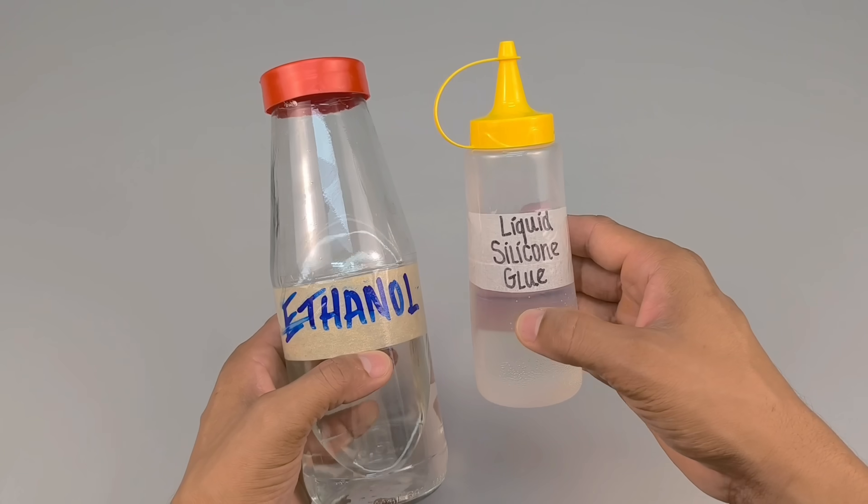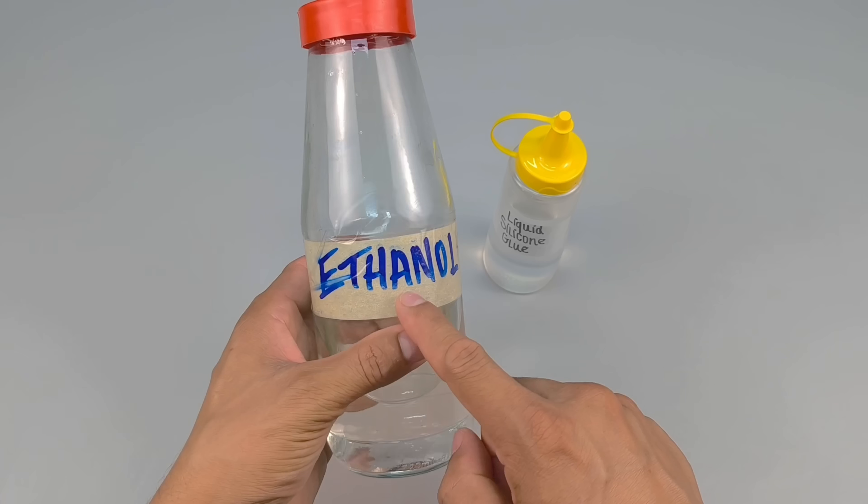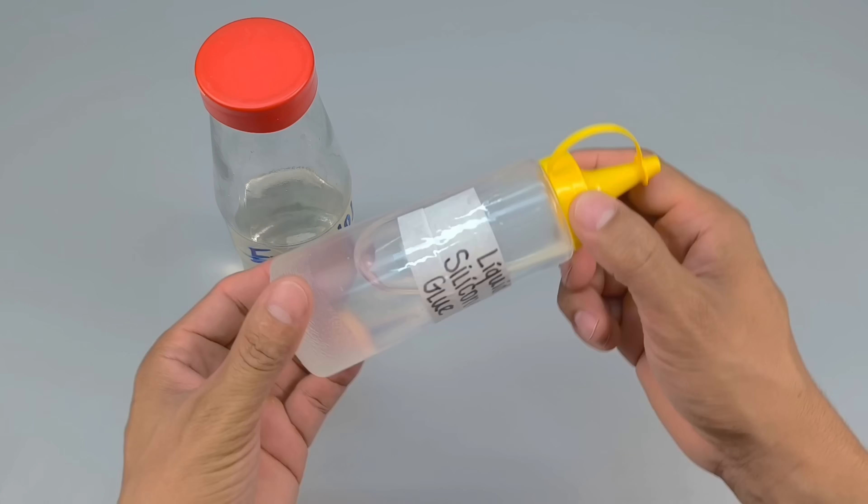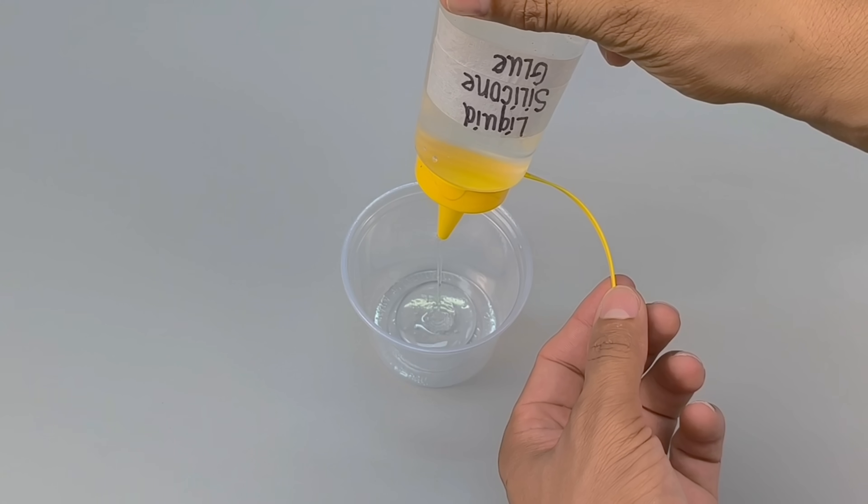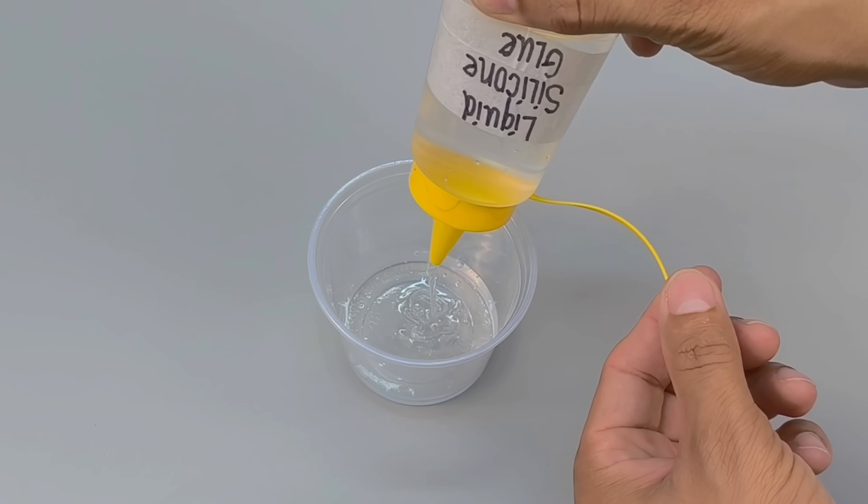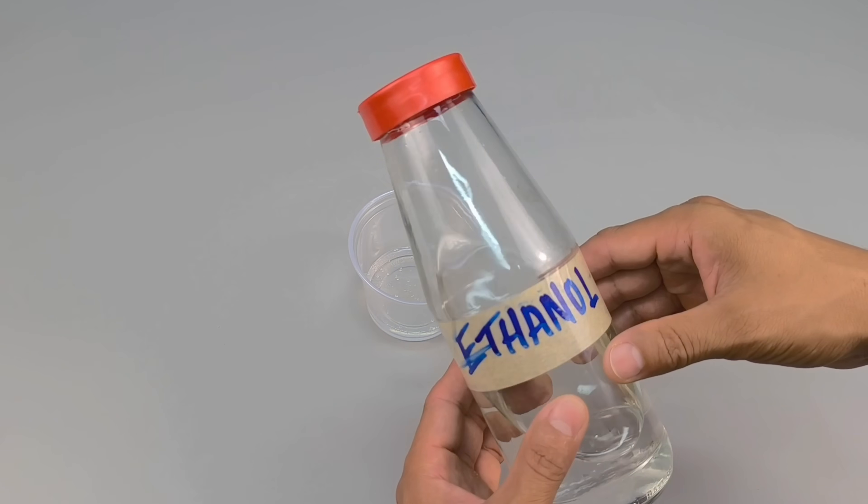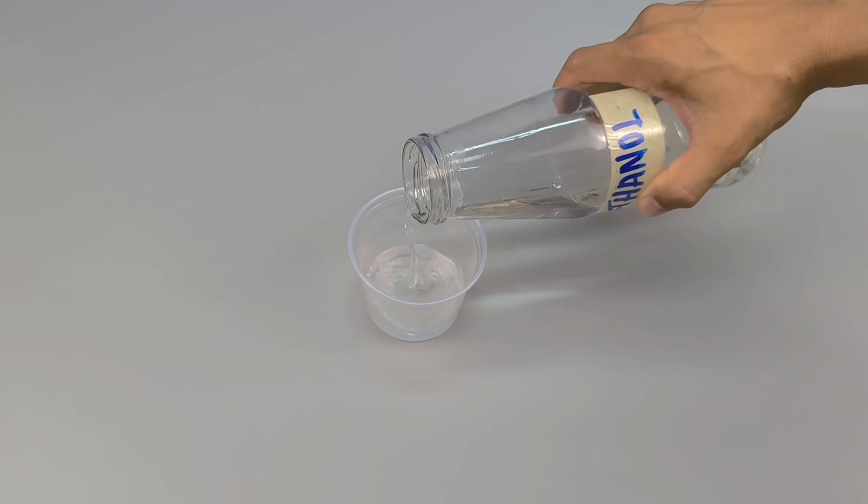Have you ever wondered what happens when we mix two completely different products that, in theory, should never be combined? On one side, liquid silicone glue used in crafts, repairs, and small fixes. On the other, ethanol, known for its ability to dissolve, clean, and evaporate easily. But what if I told you that together, they can create something completely new? A mixture with properties no one expected. Something that transforms simple glue into a durable and surprising metallic paint.